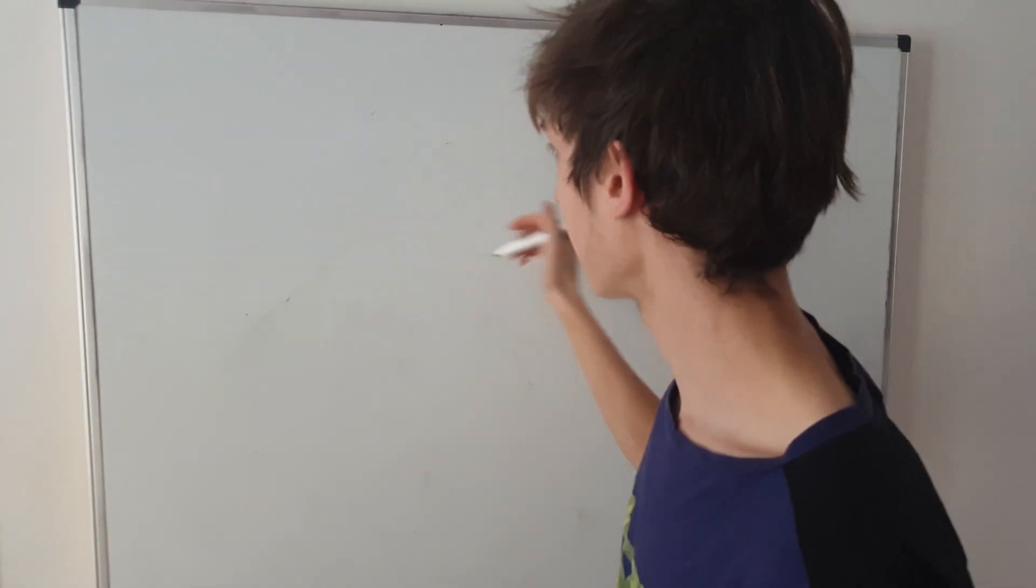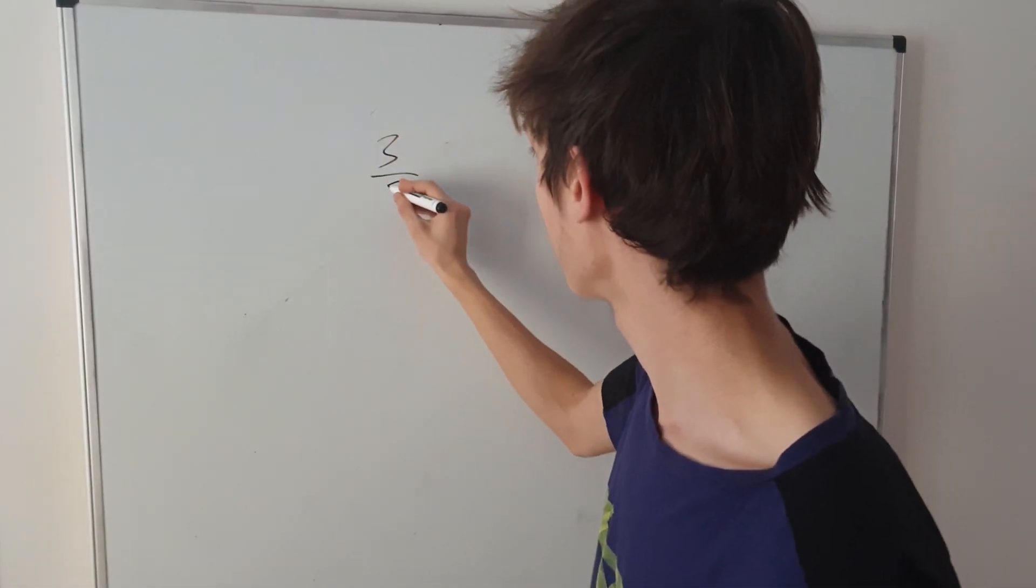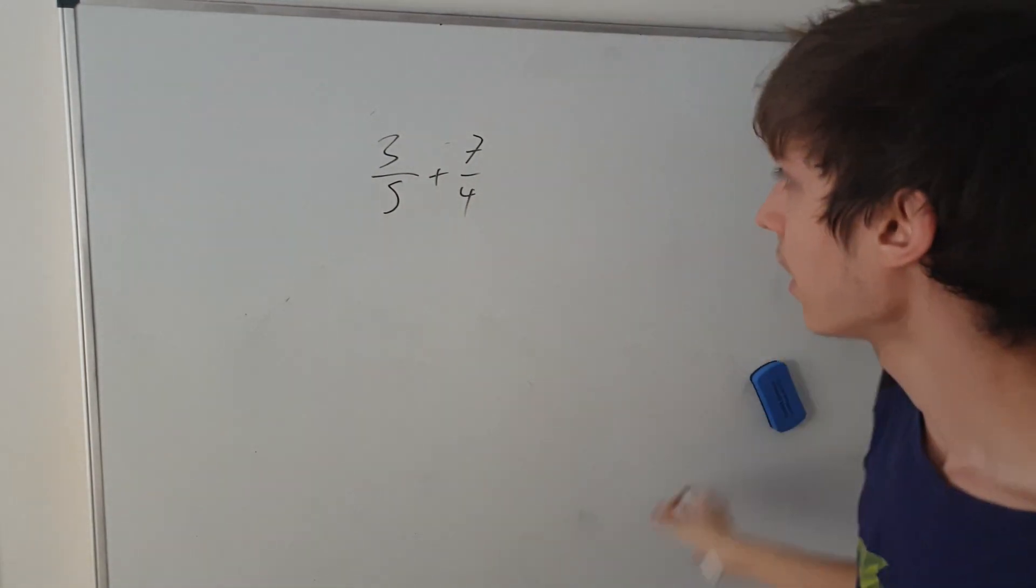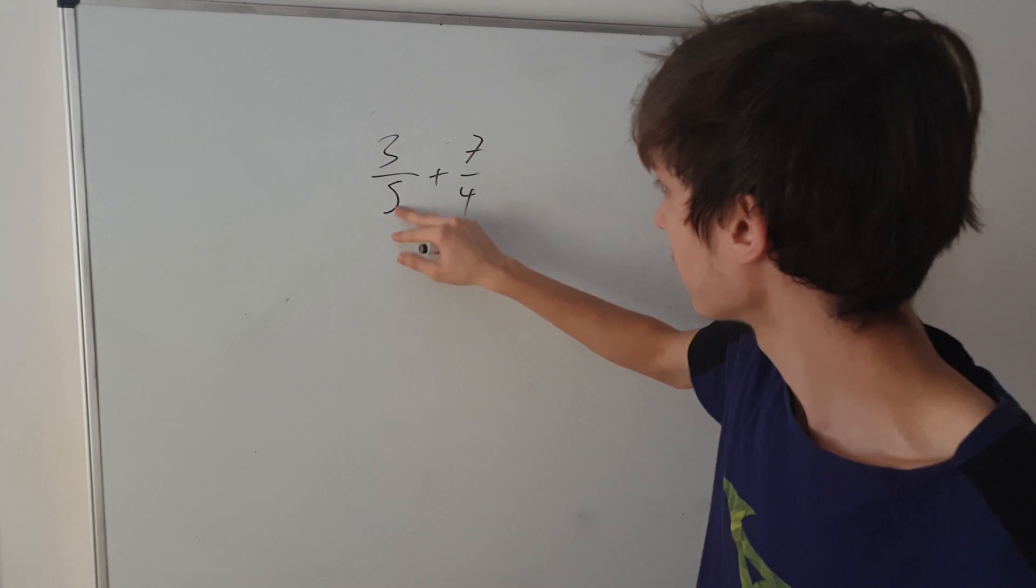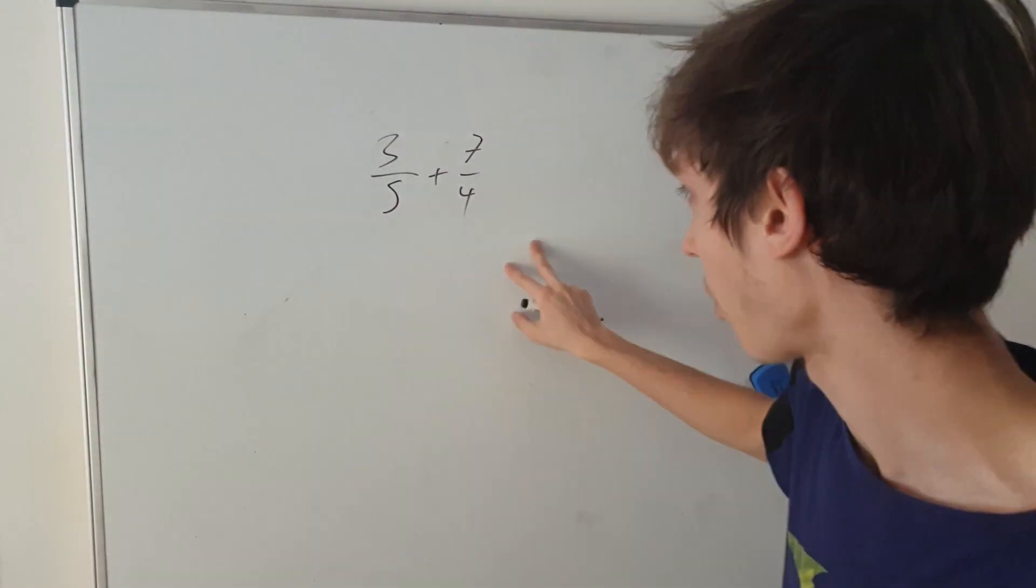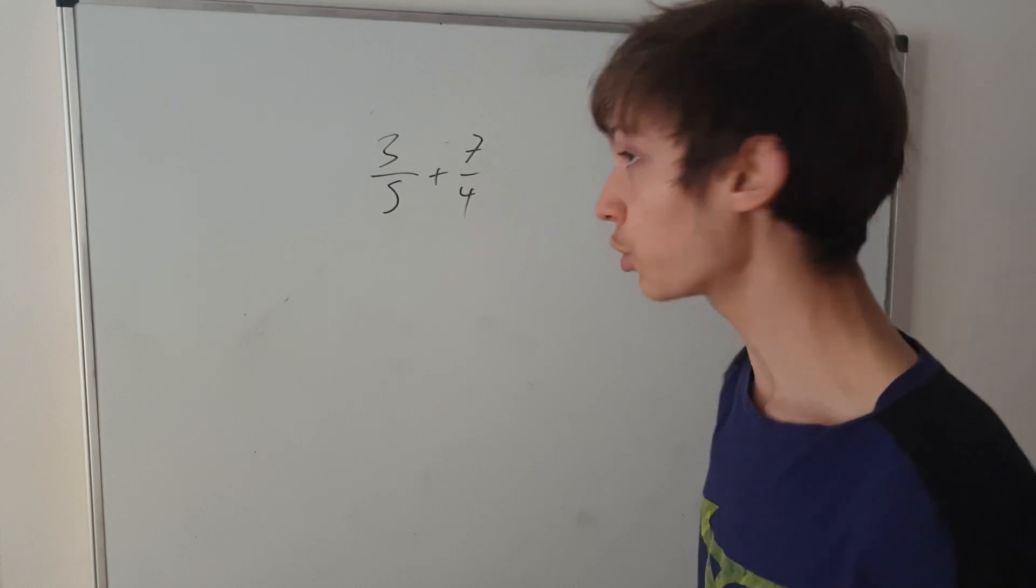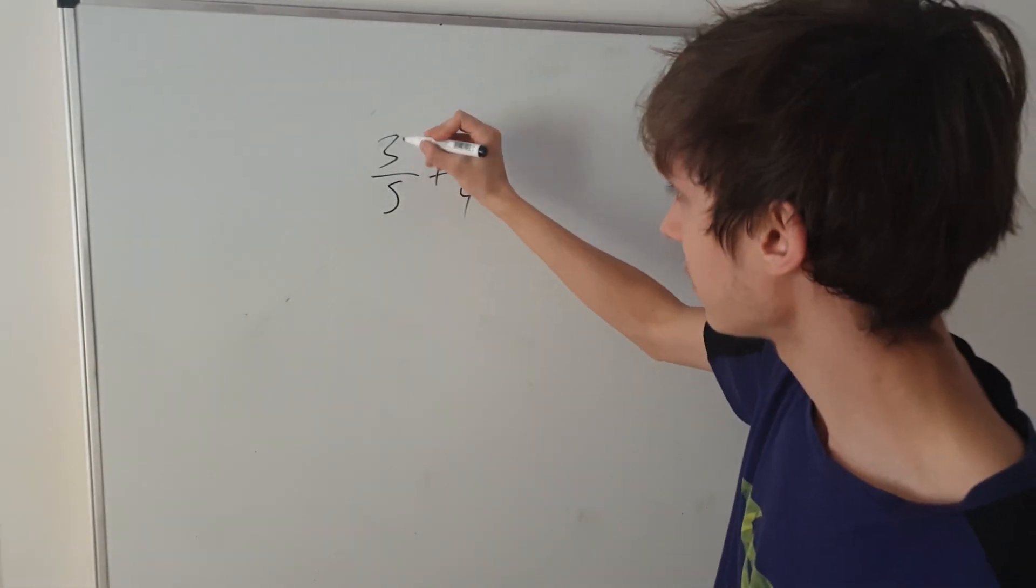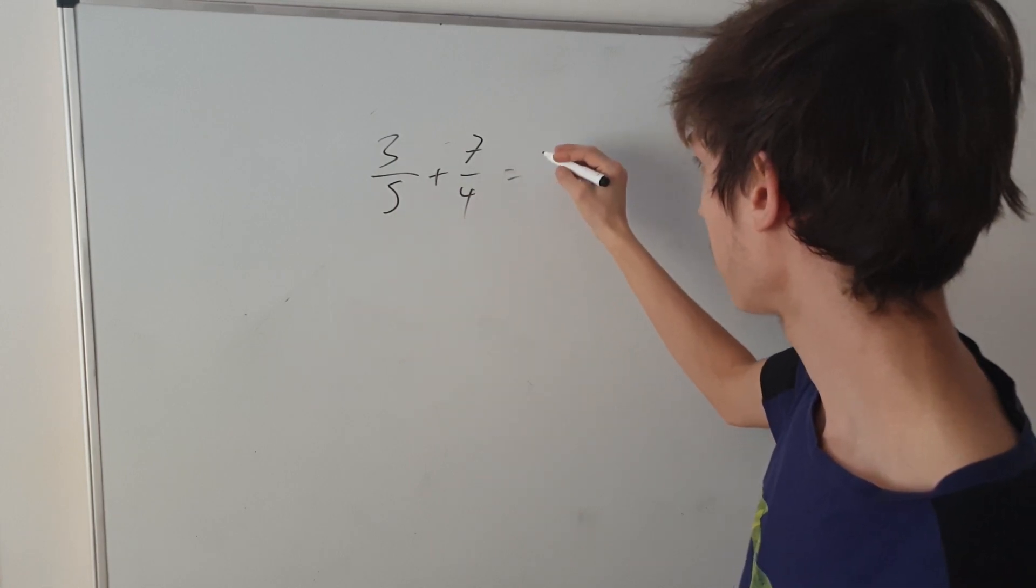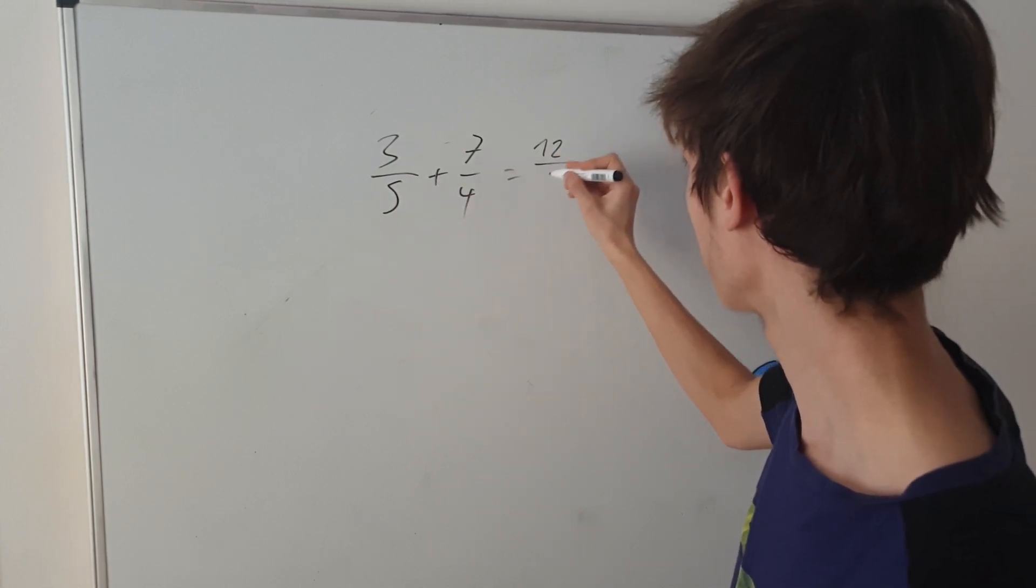This one will be done quicker. I can say 3 over 5 plus 7 over 4. Now, we have to take, again, to the smallest to be simpler, to the smallest common denominator. And that will be 20. Okay? So, we have to multiply both this and this by 4 to get 20 in the bottom.